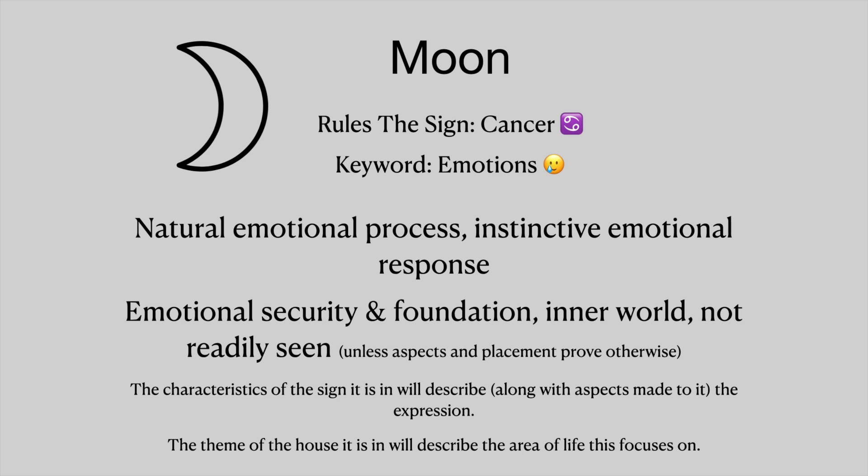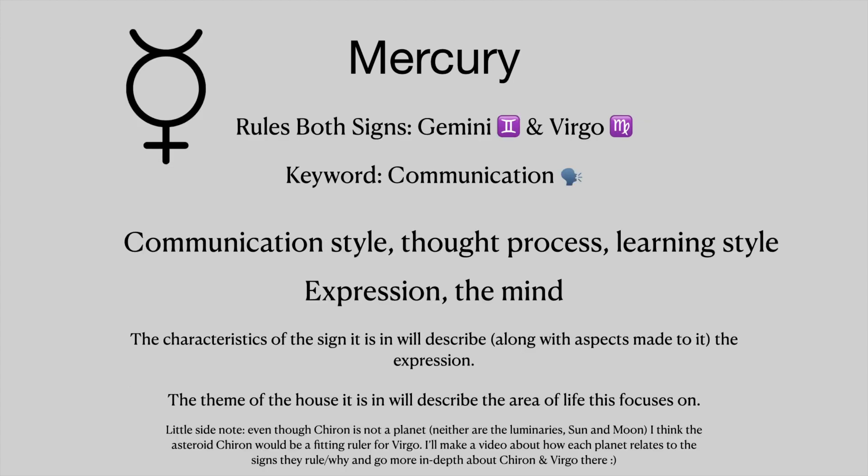Mercury rules both Gemini and Virgo, and the keyword is communication. This is our communication style, thought process, learning style, expression, and the mind. Again, the characteristics of the sign it is in will describe, along with aspects made to it, the expression, and the theme of the house it is in will describe the area of life this focuses on.